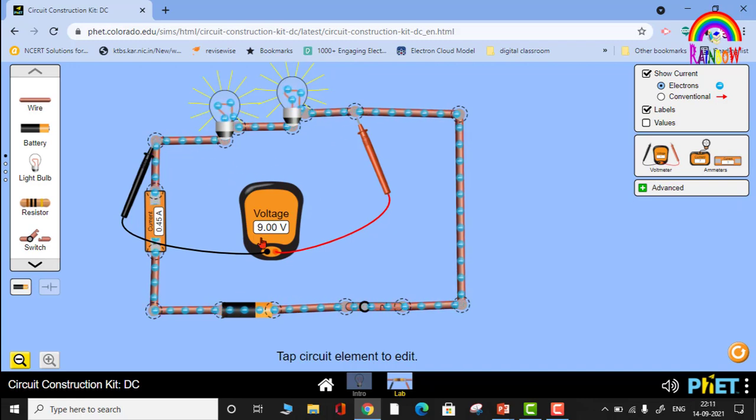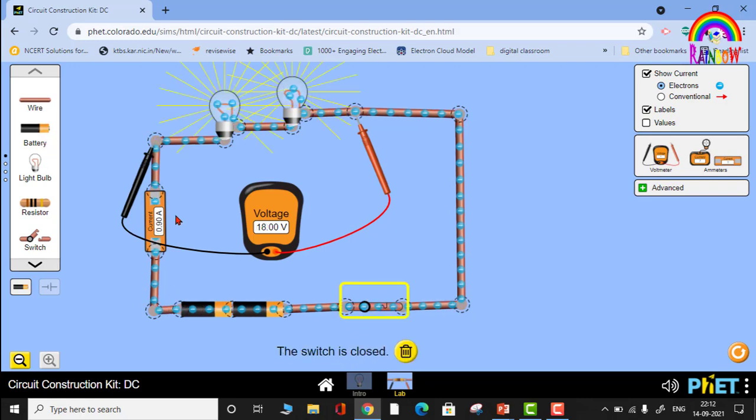Now I will put one more battery and take the readings. Yes, switch on. See, the ammeter reading is 0.9 ampere, that is current through the circuit is 0.9 ampere, and voltmeter reading is 18 volts. That is, potential difference is 18 volts.